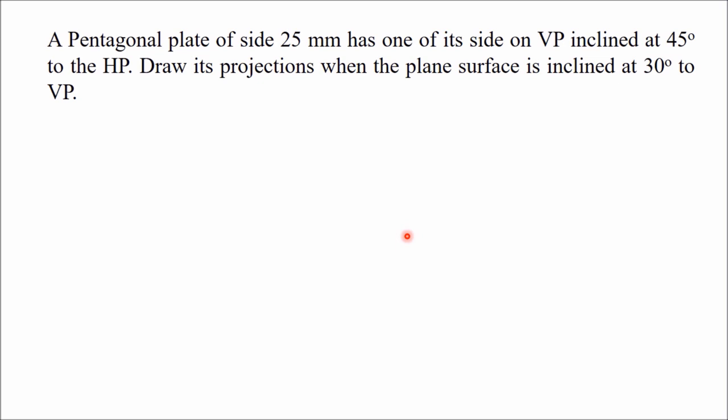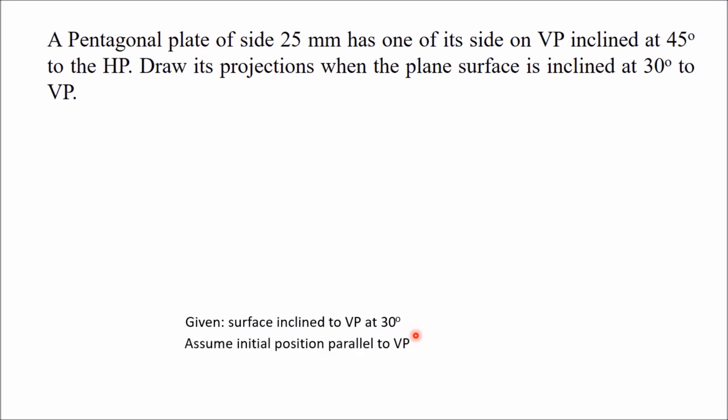Projections of oblique planes are drawn in three stages. In the first stage, we keep the plane parallel to either HP or VP depending on which it is making an angle with. The first given condition is surface inclined to VP at 30 degrees, therefore assume the initial position parallel to VP. We will draw that view first in which the true shape of the given plane is visible. When the plane is kept parallel to VP, the true shape will be visible in the front view, so we will draw the front view first.